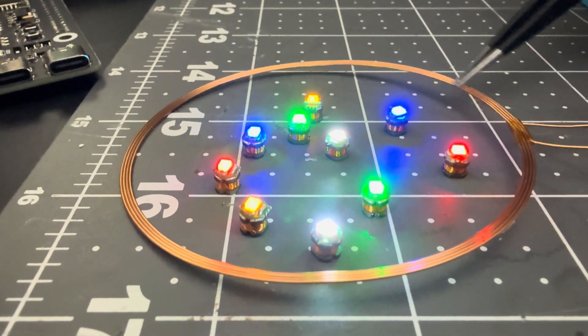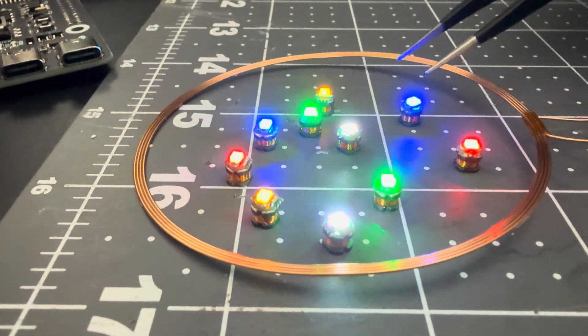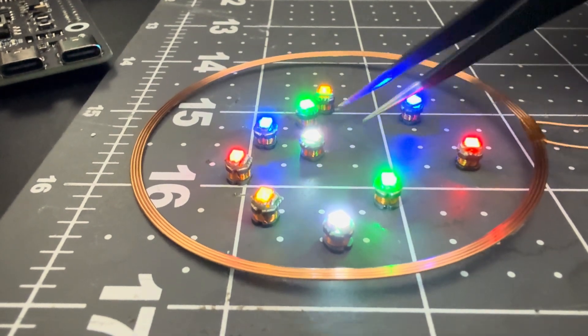You can have your dice tray with this coil underneath, so when you roll the dice they light up. Pretty cool!